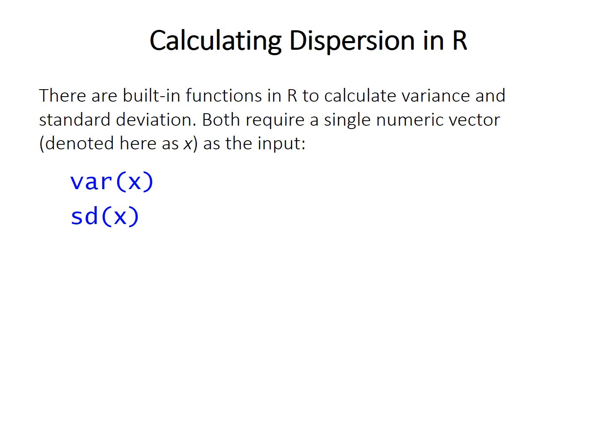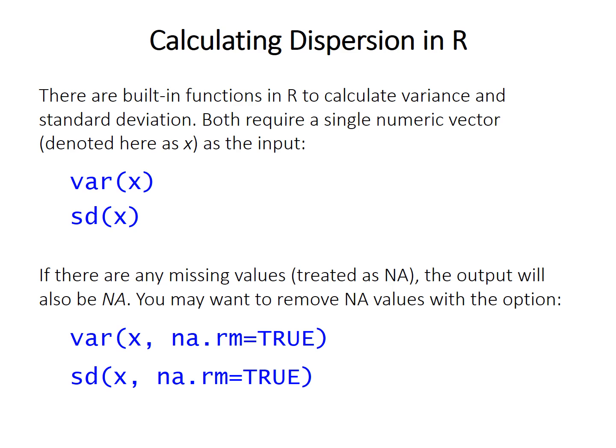So R has built-in functions to calculate both variance, var, and standard deviation, sd. Like the mean and median functions from the previous video, these both require a single numeric vector, a single set of numbers as the input. Like I mentioned with the mean, these both treat NA values, missing data, as NA. And so you'll run into this problem where if there is missing values, the result of the function will also be NA. So you might want to remove those NA values using this NA dot RM equals true option that's built into either function.